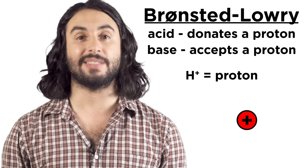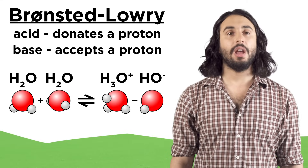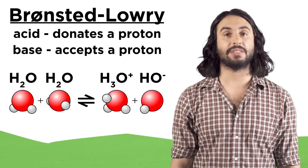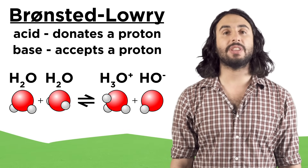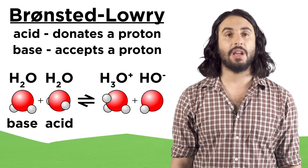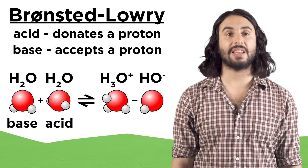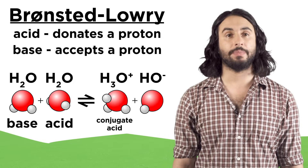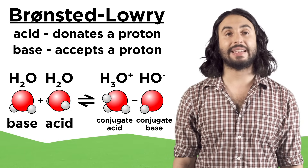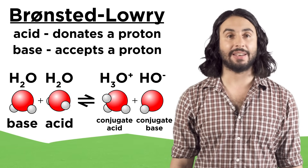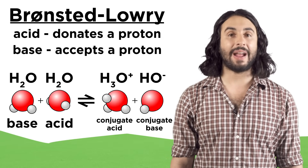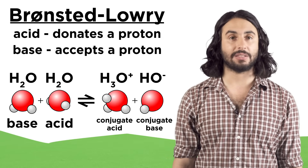Proton transfer is a big part of chemistry. An acid and base will react to form a conjugate acid-base pair. The thing that gives up a proton is the acid; the thing that accepts it is the base. On the product side, the base has become the conjugate acid and the acid has become the conjugate base, because the thing that gained the proton could potentially lose it again, acting as an acid, and the thing that lost the proton might gain it back, acting as a base.